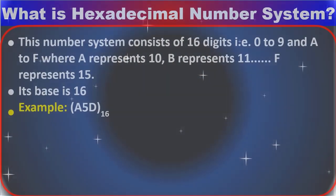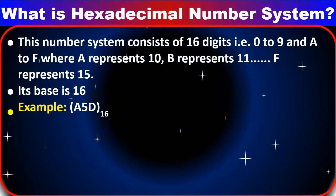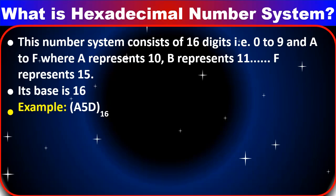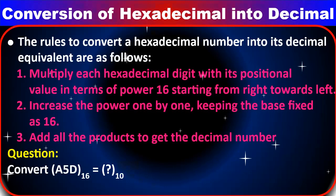What is the hexadecimal number system? The hexadecimal number system consists of 16 digits, that is 0 to 9 and capital A to capital F, where A represents 10, B represents 11, and so on, and capital F represents 15. The base of the hexadecimal number system is 16. One example is A5D (base 16).